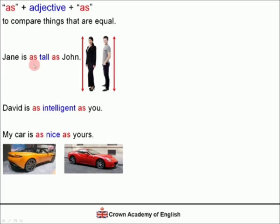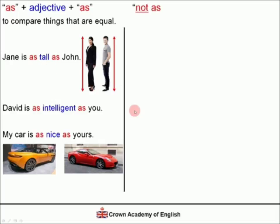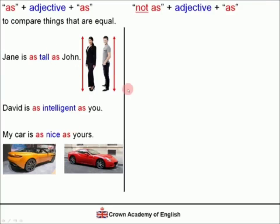After the word 'as' is the adjective, and this is the attribute that we are comparing. There is also a negative form of this structure: 'not as', followed by the adjective, followed by 'as'. Let's look at the same examples in the negative.